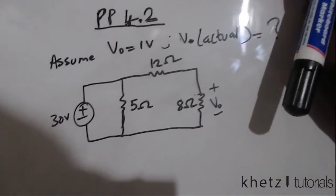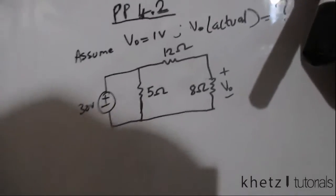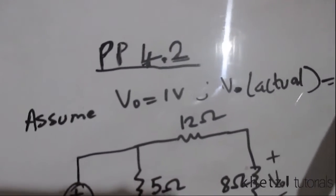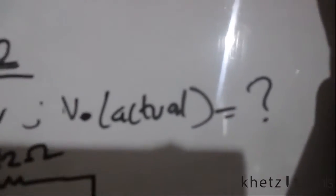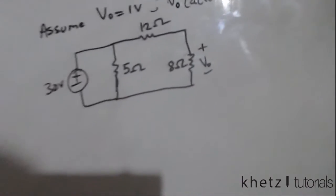Welcome to Khetz Tutorials. In this video I'll be covering practice problem 4.2. The question says assume that vo equals 1 volt, then find the actual value of vo.